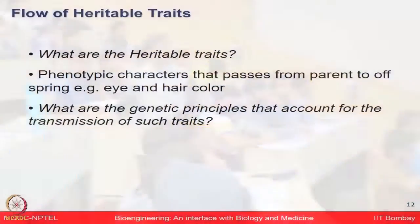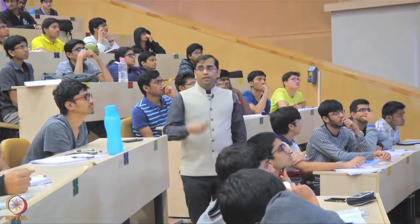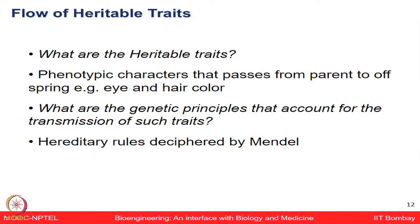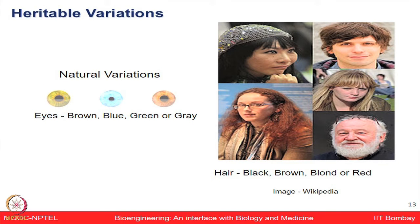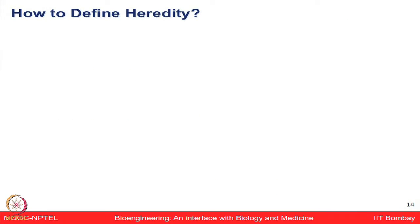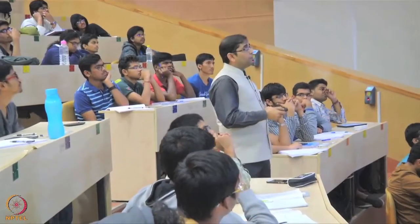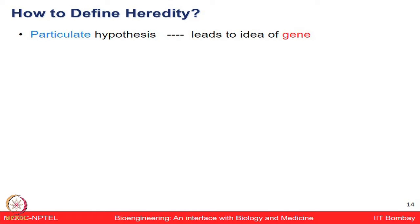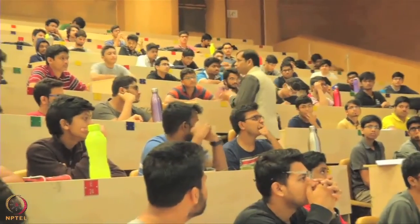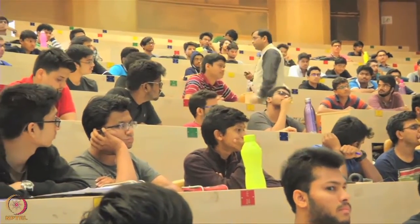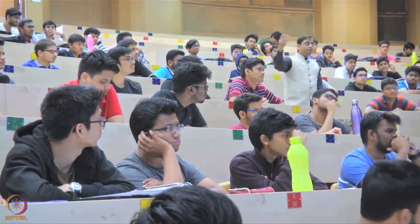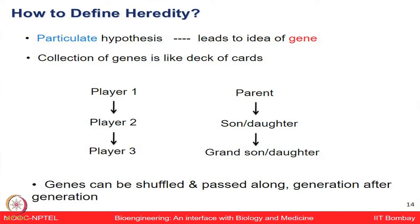What genetic principles account for the transmission of traits? Many rules were deciphered by Mendel. Natural variations like hair and eye color pass from one generation to the next as heritable characters. Two hypotheses emerged to define hereditary: the particulate hypothesis — where genes are like shuffled cards randomly distributed each generation — and the blending hypothesis, where genes from two parents blend like paint colors to produce a new color.